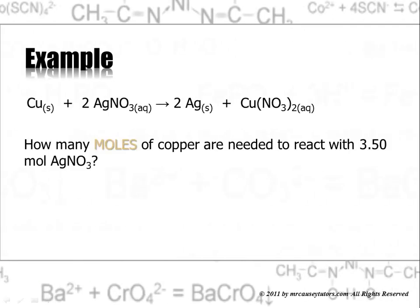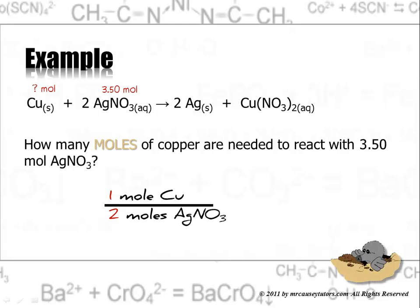Here's an example. Our equation again with copper and silver nitrate. How many moles of copper are needed to react with 3.5 moles of silver nitrate? I always like to write what I'm looking for on my chemical equation. I've written it in. Now let's go get the mole ratio. The mole ratio is one mole of copper for every two moles of silver nitrate.